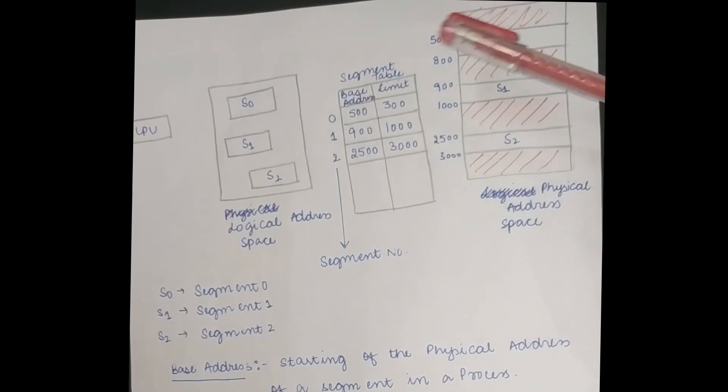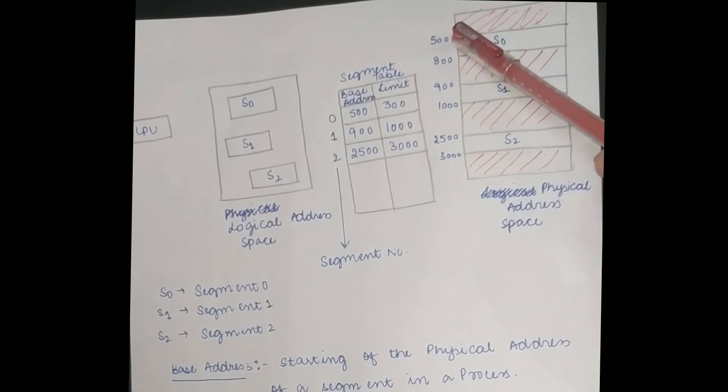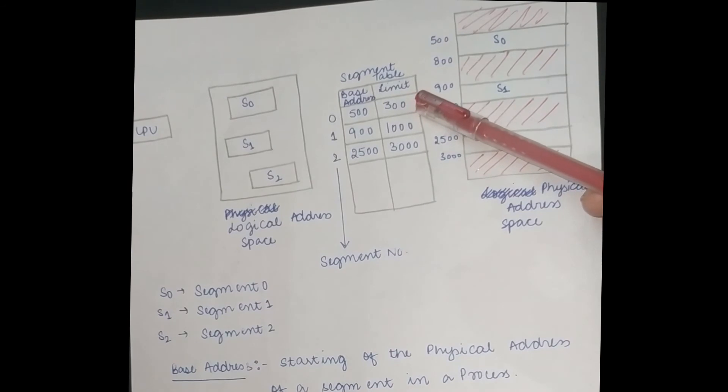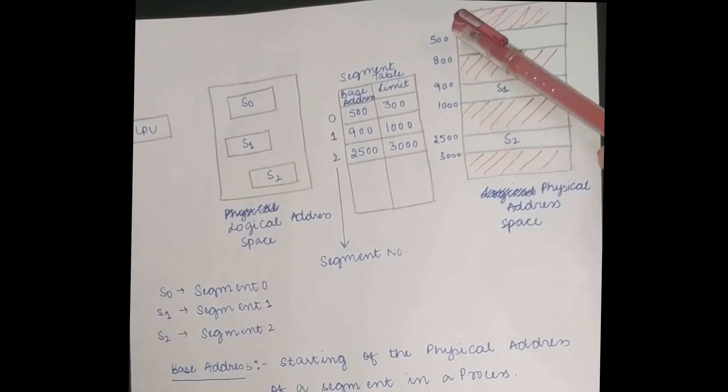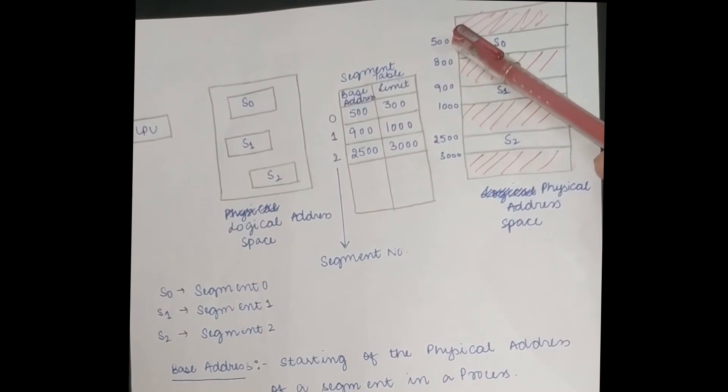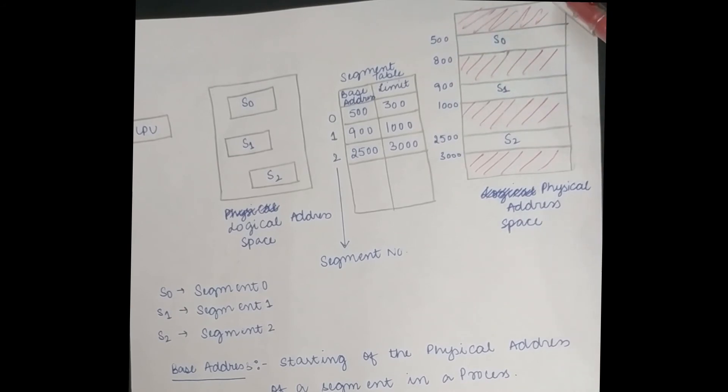Suppose 500, the process starts from 500 and it is stored in s0. Now when will it go? It will go to 300, so 500 plus 300 it will go to 800. So this is basically the limit and this is the base address of a segment, right?